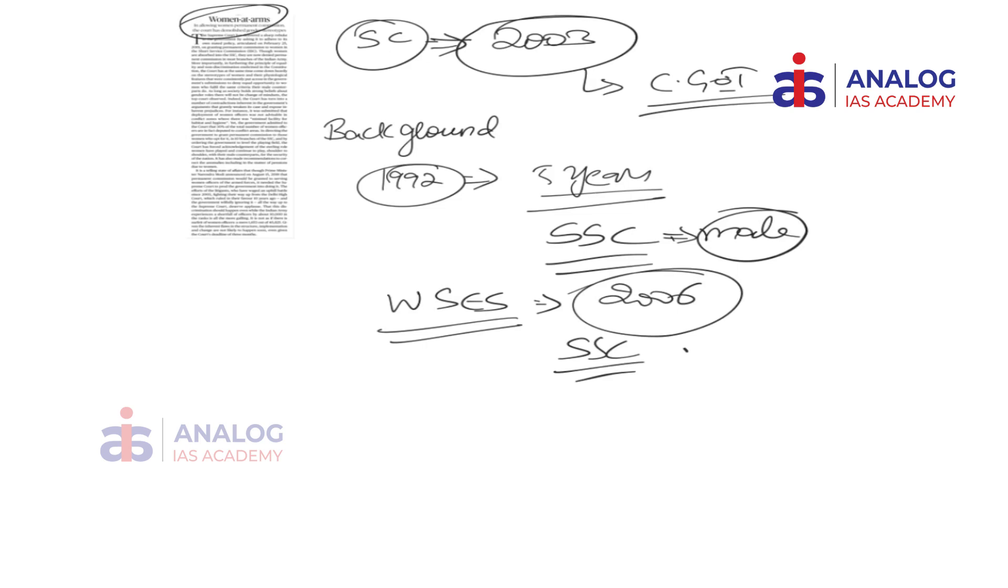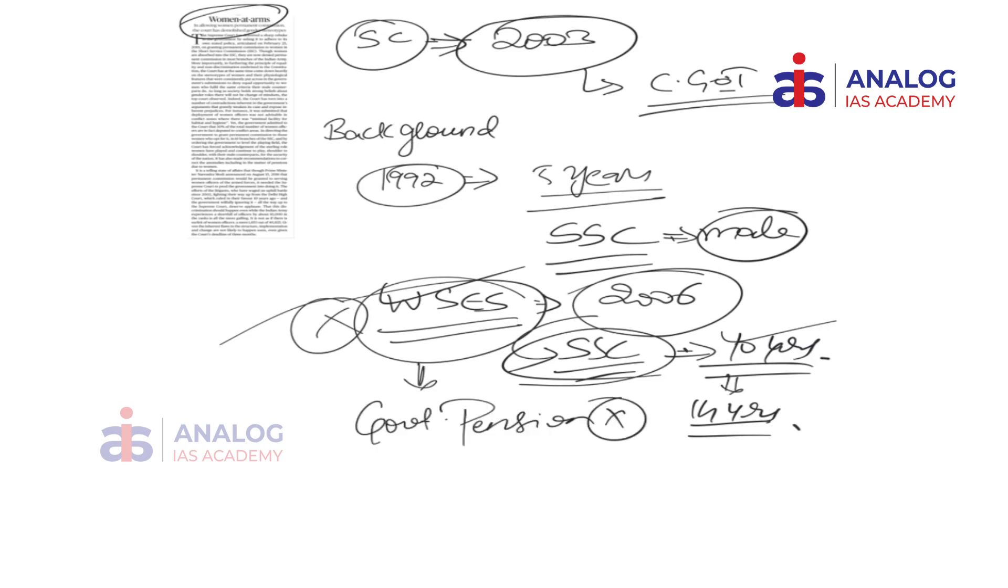The SSC was extended to women officers who were now commissioned for 10 years instead of five, extendable till 14 years depending upon various conditions. Serving women officers were given the option to move to this new scheme or continue under the erstwhile old scheme. However, they were restricted to roles in streams specified earlier. While male officers were allowed to opt for permanent commission at the end of 10 years, women officers did not get this provision. Thus they were kept out of command appointments and could not qualify for government pension because government pension generally starts only after 20 years of service.